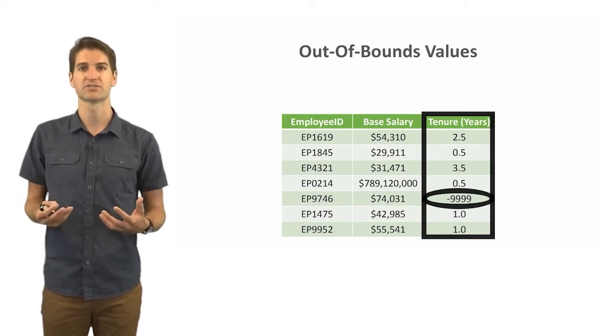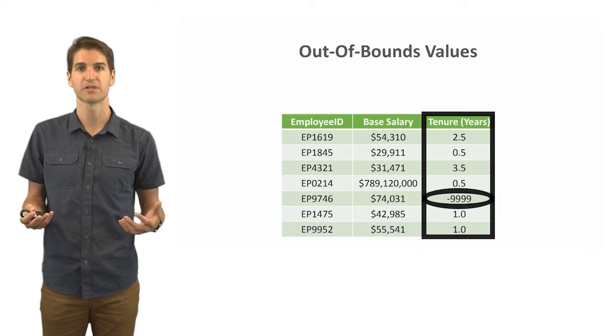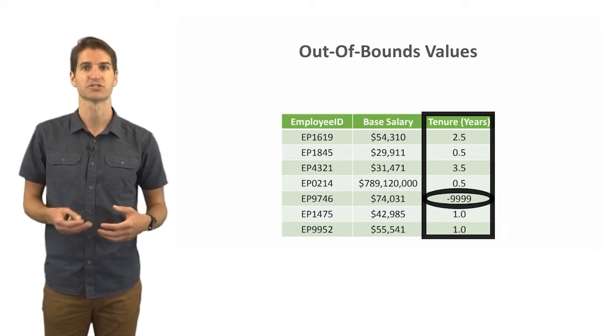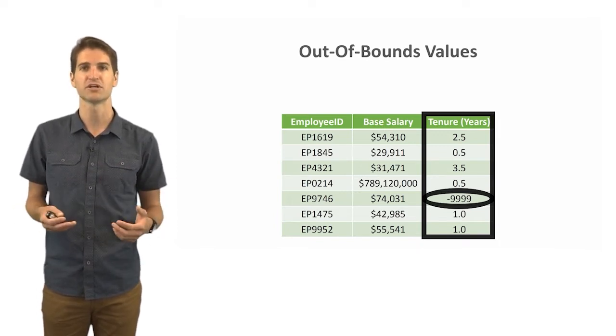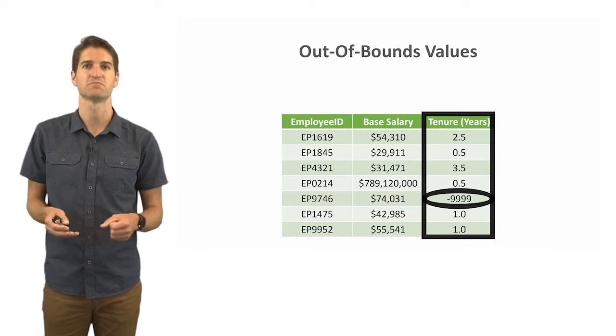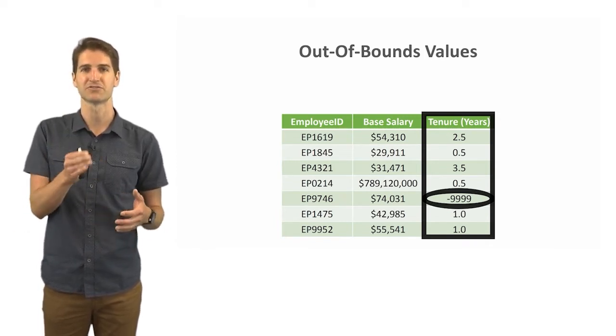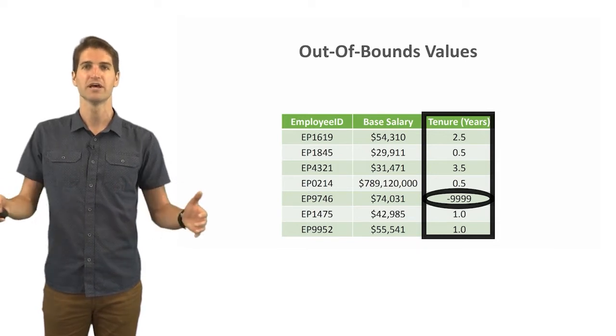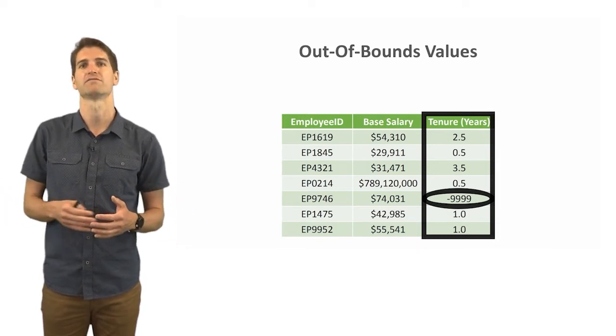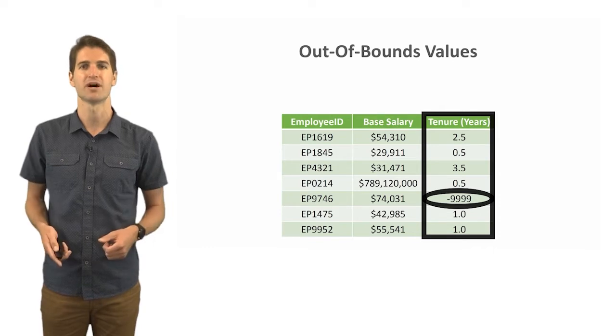This is another thing we want to consider: looking for these out-of-bounds values. This is another great example where frequencies can come into play and running counts on variables. Any type of count or frequency would definitely show you these as being outliers and draw your attention to them because you could see that there's this steady progression or natural range that you would expect and then a very extreme, maybe implausible value.